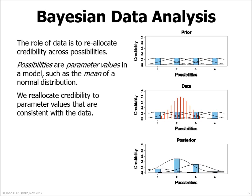Bayes' rule merely provides the mathematically correct reallocation of credibility across the candidate parameter values, as shown in the bottom panel. The result reveals how strongly we should believe in each candidate parameter value given the data.